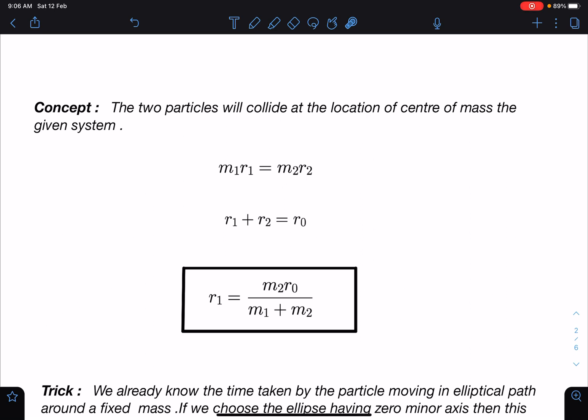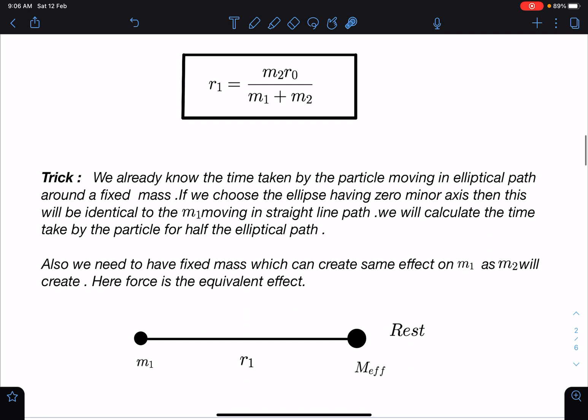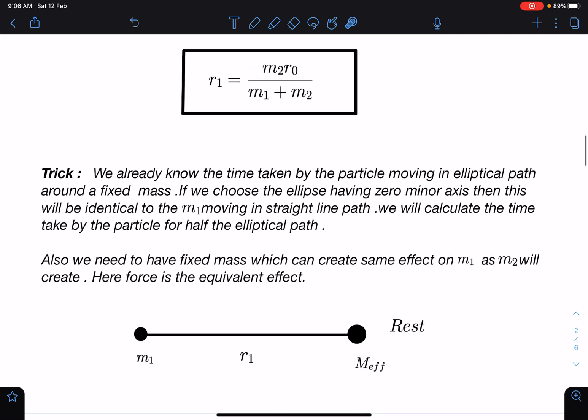I am going to make some assumption here, comparison as well. So I'll just tell you how this trick is applied. We already know the time taken by the particle moving in elliptical path around a fixed mass, right? And we know it depends only on the major axis. The entire time period is 2π times the square root of a cubed by GM, where a is the length of semi-major axis.